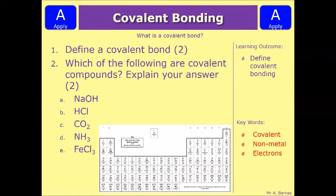Let's have a look at a couple of questions. The first one should be fairly straightforward: define a covalent bond — it's worth two marks. The second part is which of the following are covalent compounds, and explain your answer. The options are NaOH, HCl, CO2, NH3, and FeCl3. The hint is on your periodic table you have that zigzag — I would always recommend drawing that zigzag, because then you know that everything to the right of that zigzag is your nonmetal, and everything to the left is a metal. Once you know that, you can figure out the type of bonding involved. Pause the video, have a go at the two questions, and we'll see how you've done in a minute.